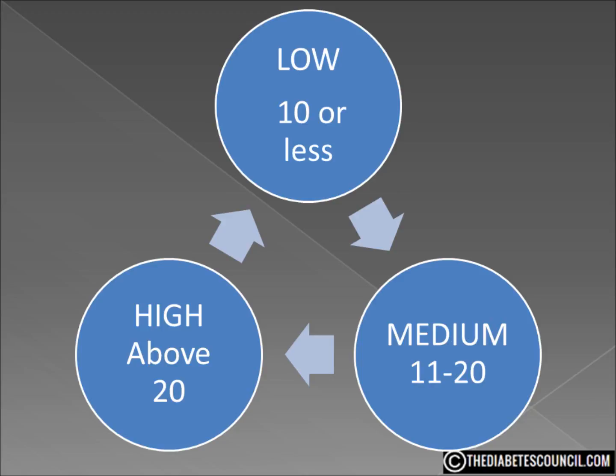A prime example of a food that is misleading is the pineapple. The pineapple has a GI of 59, which might make us want to avoid it. But the glycemic load is only 7, and that's considered very low.